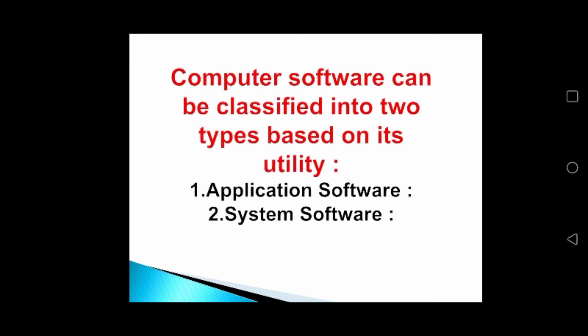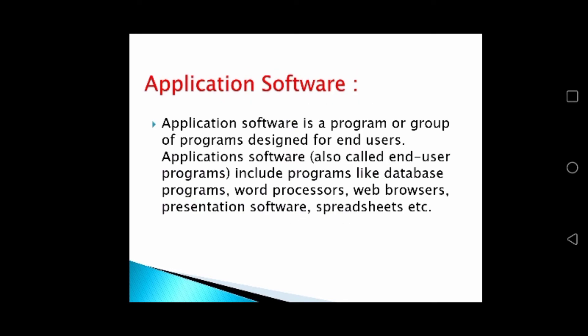Computer software can be classified into two types based on its utility. The first one is application software and the second one is system software. Application software is a program or group of programs designed for end users, also called end user programs. These include programs like database programs, word processors, web browsers, presentation software, spreadsheets, etc. Application software depends on system software; without system software, we cannot use application software.